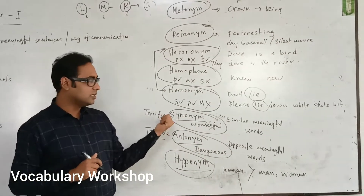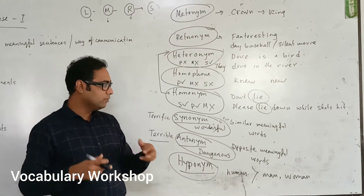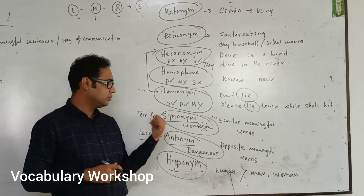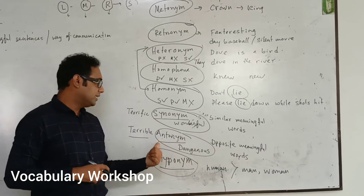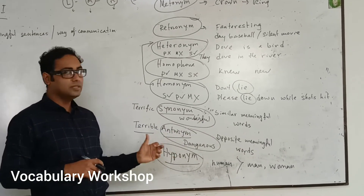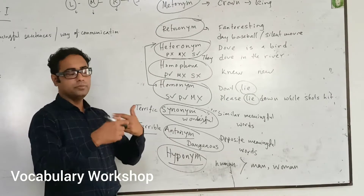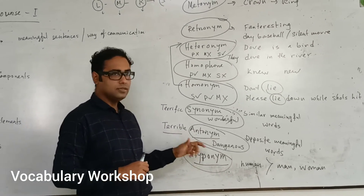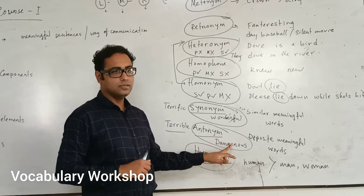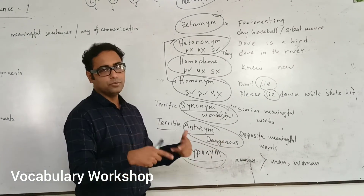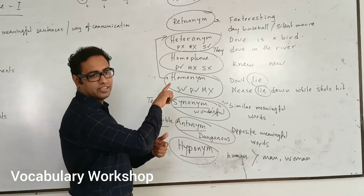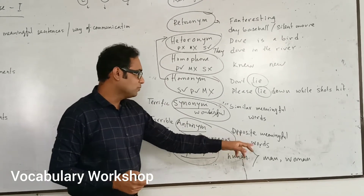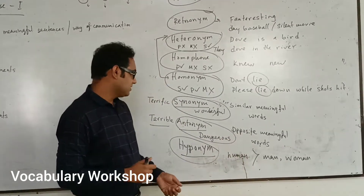Synonyms are similar meaningful words — for example, 'terrific' and 'wonderful.' Antonyms are opposite meaningful words — for example, the opposite of 'terrible' is 'terrific.'